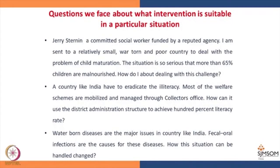There is one Jerry Sternin who is a committed social worker, funded by a reputed agency. His agency sent him to a relatively small war-torn and poor country to deal with the problem of child malnutrition. The problem is so serious that more than 65 percent of children are malnourished.